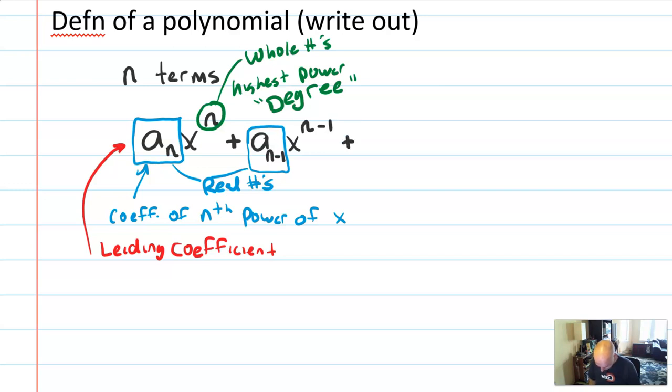Integers could be negative, which is not allowed, but whole numbers have to be positive. Let's keep writing out some terms. So the next term would be the n minus 2 term. So I would have the coefficient a sub n minus 2. That's the coefficient times x to the power of n minus 2.